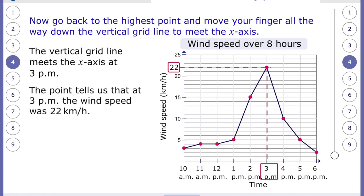So this tells us that at 3 p.m. the wind speed was 22 km per hour. You can read up and across and you can do this for different times. So for example at 12 p.m. read up and then across and you can see the wind speed was 4 km per hour.